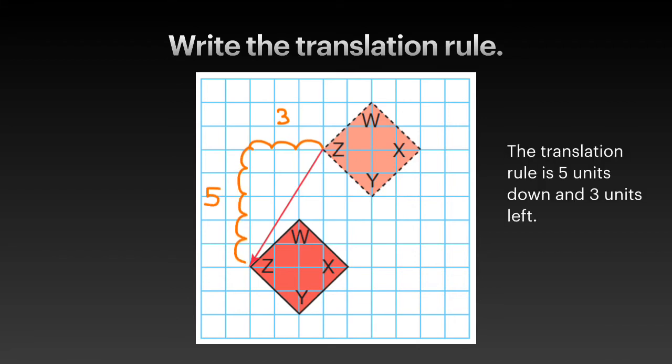The translation rule is 5 units down and 3 units left.